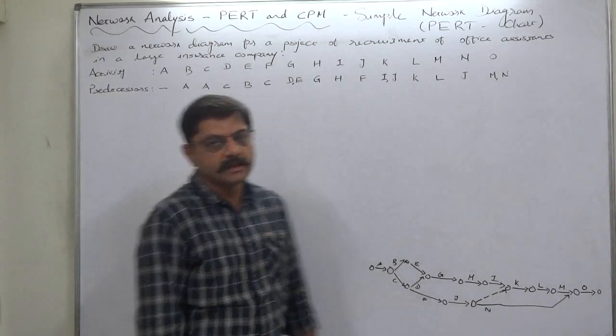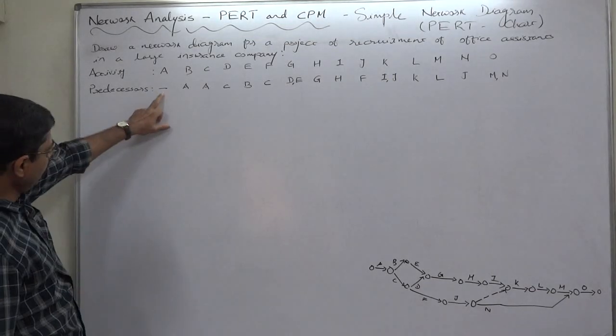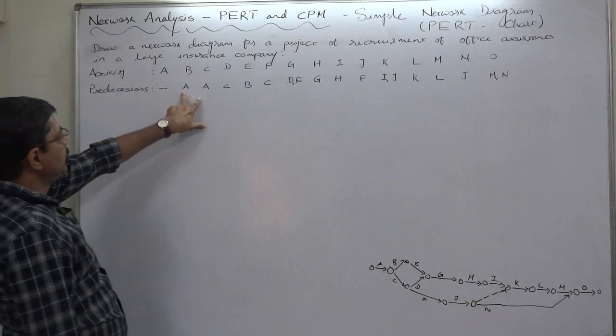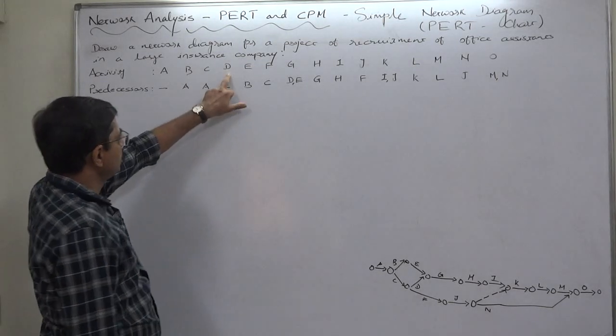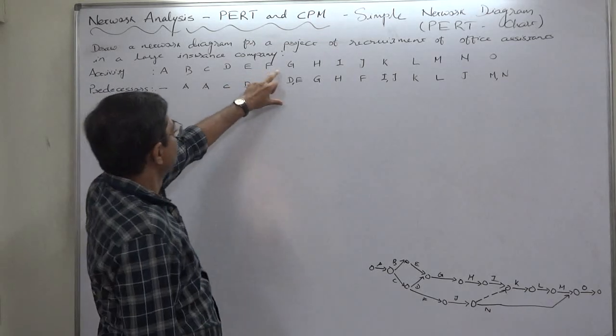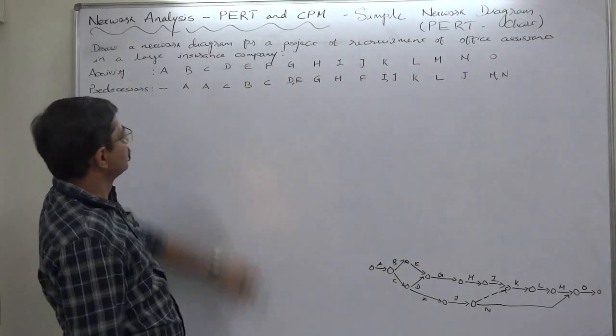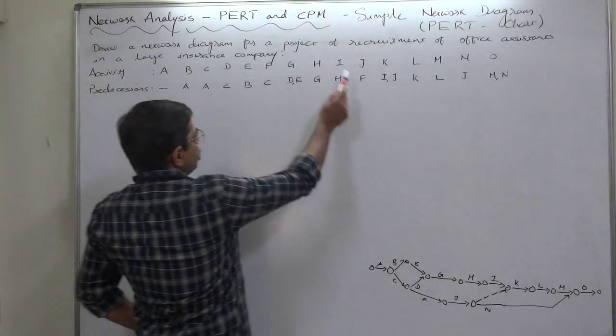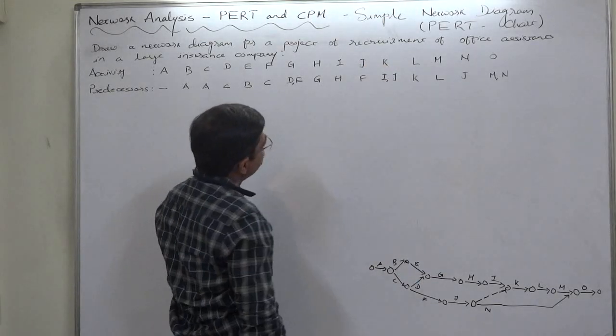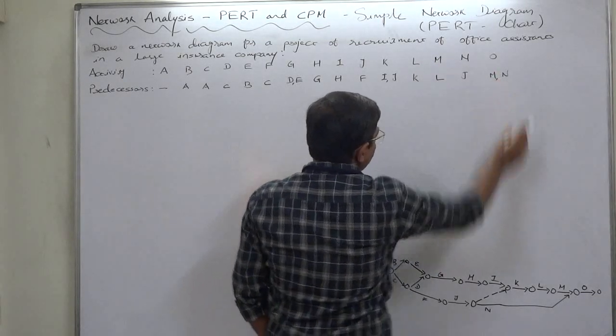There are many activities because the entire procedure of recruitment and selection is quite lengthy. A to O are the activities. A has no predecessor, that means A is the initial activity. A becomes predecessor of B and C. C becomes predecessor of D. B becomes predecessor of E. C is again predecessor of F. D and E are predecessors of G. G is predecessor of H. H is predecessor of I. F is predecessor of J. I and J both are predecessors of K. K is predecessor of L. L of M. J of N. And M and N of O.